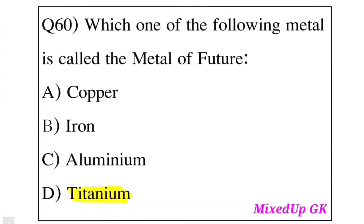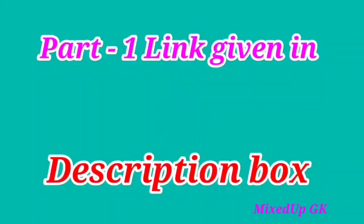Question 60 (last question): Which one of the following metals is called the metal of the future? Option A: Copper. Option B: Iron. Option C: Aluminum. Option D: Titanium. The answer is Option D, Titanium. Titanium is called the metal of the future. If you have any confusion, comment in the comment box. The description link is given below. Thank you.